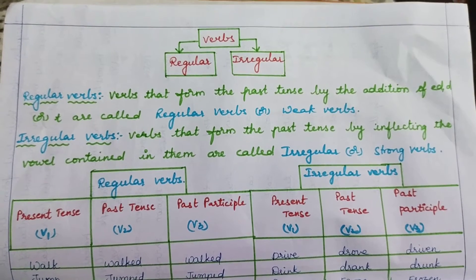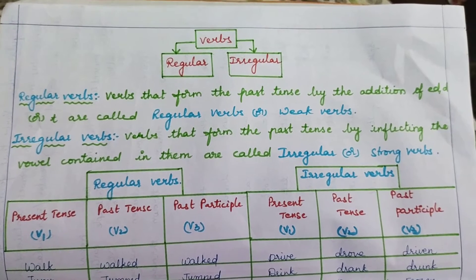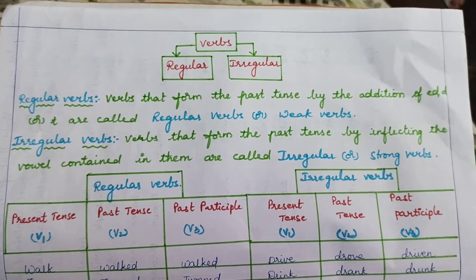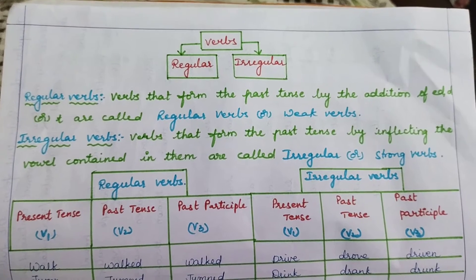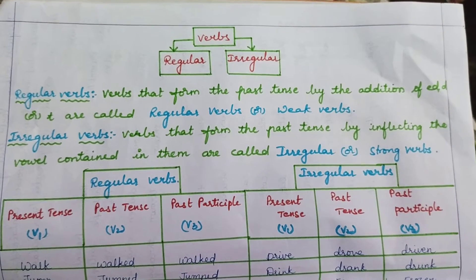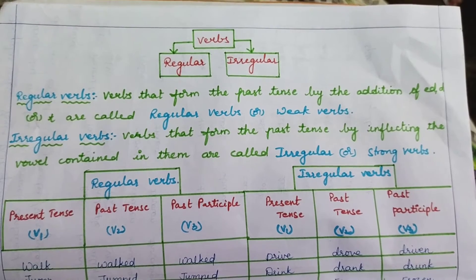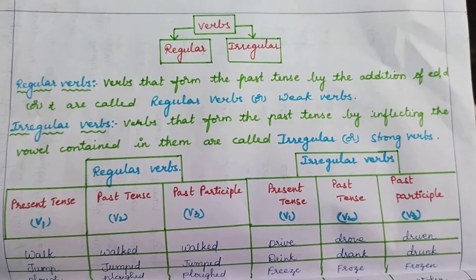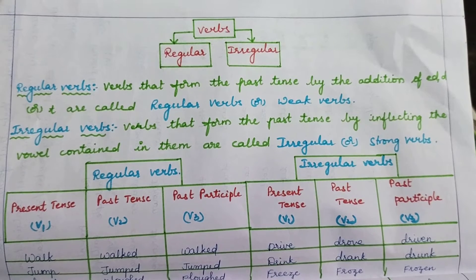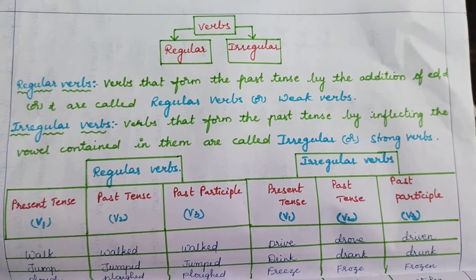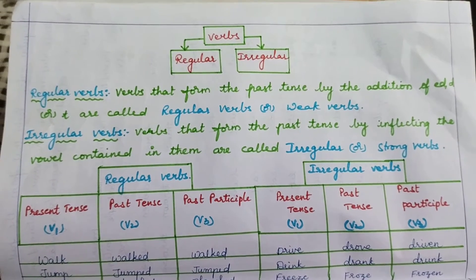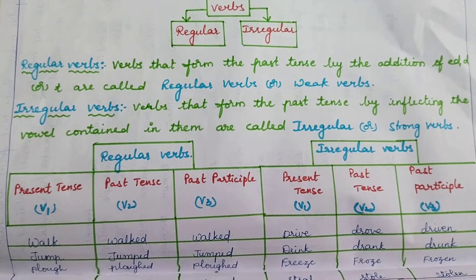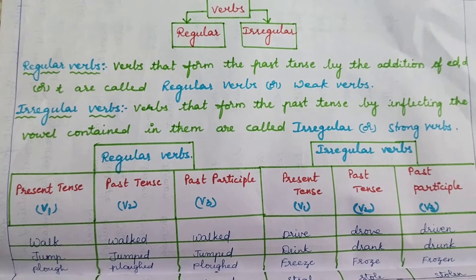For instance, you can see here: walk, walked, walked. The three forms are: present tense represented with V1, past tense represented with V2, and past participle represented with V3. I'll provide the links of tenses in the description box so you can refer to them. Participle is the form of verb which does the functions of both an adjective and a verb. Past participle form is represented by V3.